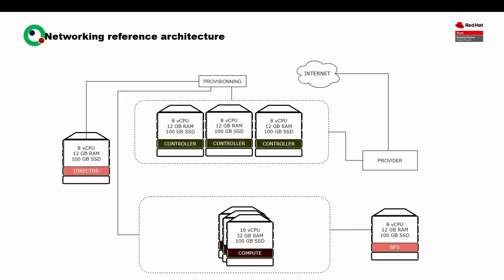Regarding the architecture, we have here the director. We will be connected through the provisioning network, and on this provisioning network we will have the controller nodes — three controller nodes — and we also have the different compute nodes connected to this provisioning network. For the external access, we will have the controllers connected to this network also, and from there we will be able to reach out to the internet.